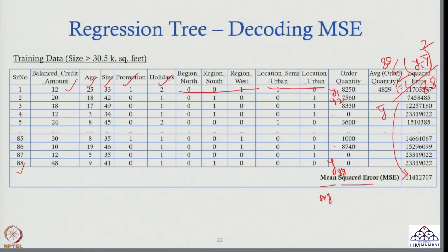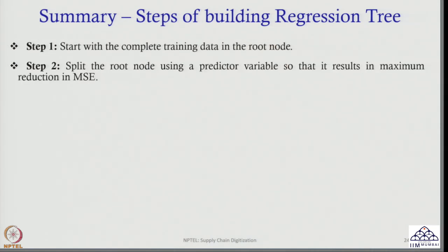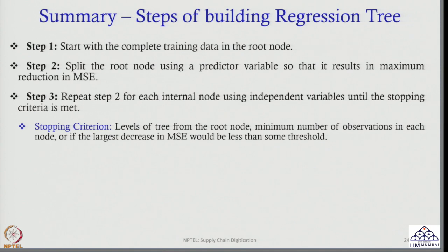With this, we finish the lecture. Summary of the steps for building a regression tree: Step 1 — start with the complete training data in the root node. Step 2 — split the root node using a predictor variable so that it results in maximum reduction in MSE. Step 3 — repeat step 2 for each internal node using independent variables until the stopping criteria is met. The stopping criteria are: level of tree from root node (depth 1, 2, 3, etc.); minimum number of observations in each node; or if the largest decrease in MSE would be less than some threshold value. Thank you, I will see you in the next class.